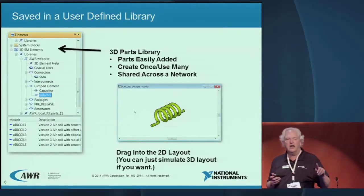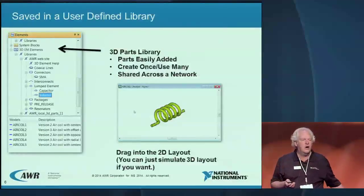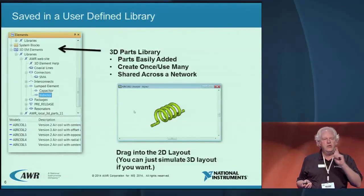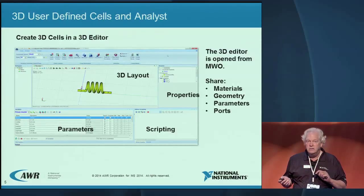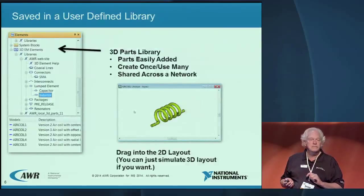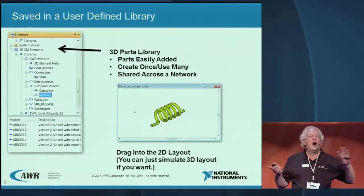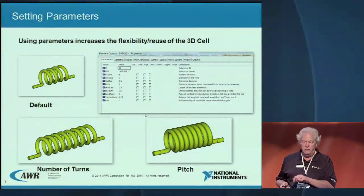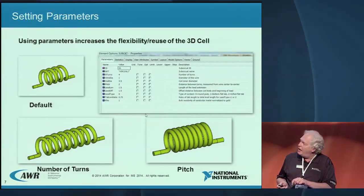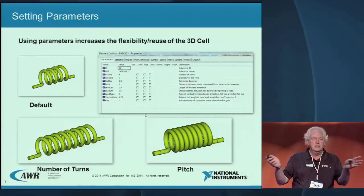I know what you're thinking — what if I've got a different connector that's not in the library? That's true. You're then free to go back to the 3D editor, create the cell, save it in the library — very easy to do — and then all of your colleagues can forevermore use it. Our vision is you'll have one person draw that shape, and then everyone uses it going forward.